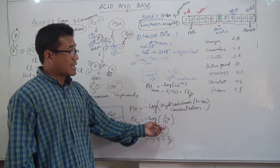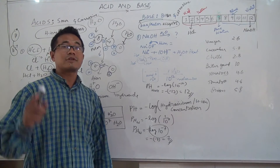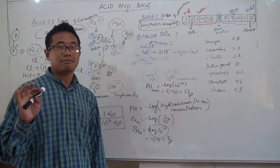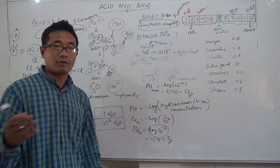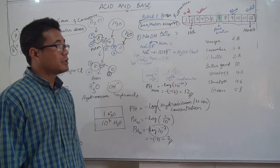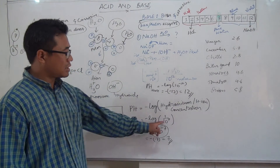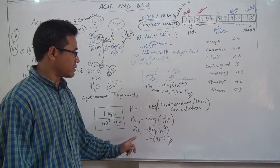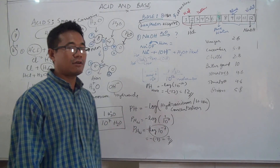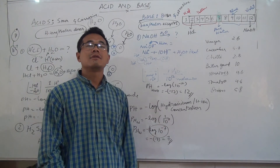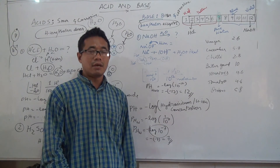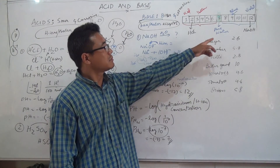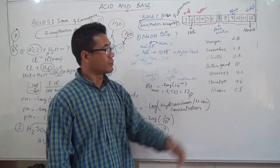If the acid has a hydronium concentration of 10 to the power of 7, it becomes very difficult to express for common people. So we simply say the pH is 7 — that is how pH makes it easy. The pH of a neutral substance is 7, and so on.